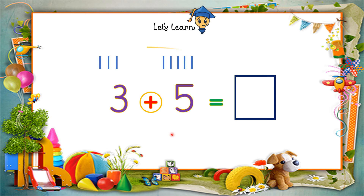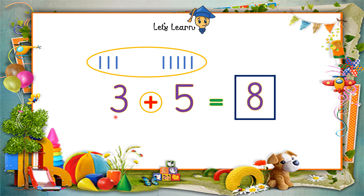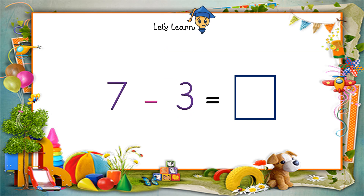Now put them all together and find out the answer. Count them together: 1, 2, 3, 4, 5, 6, 7, 8. So 8 will come over here — the answer is 8. The sum is 3 plus 5 is equals to 8. Let's solve the next sum now.